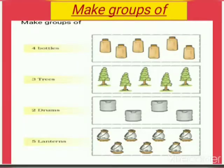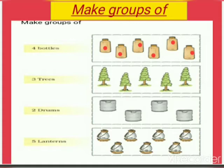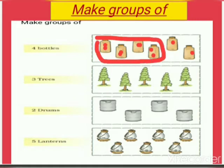Children, open your math textbook page number 30 — make groups of. Here we can see four groups. In the first group there are one, two, three, four, five, six bottles. Let us make a group of four bottles: one, two, three, four.